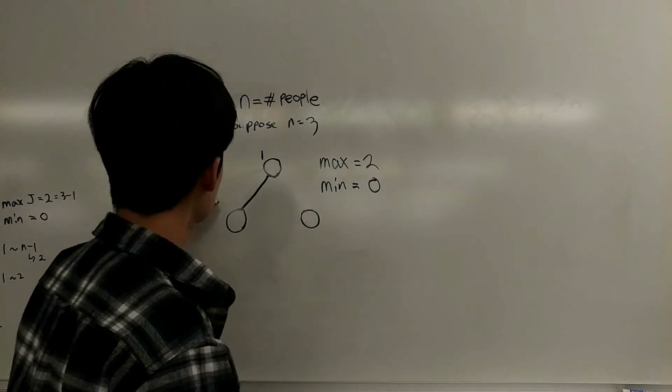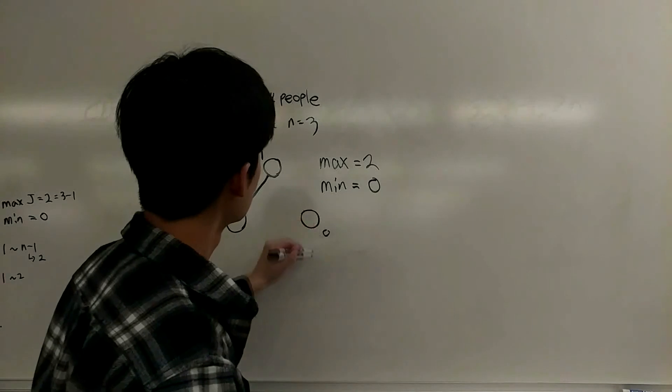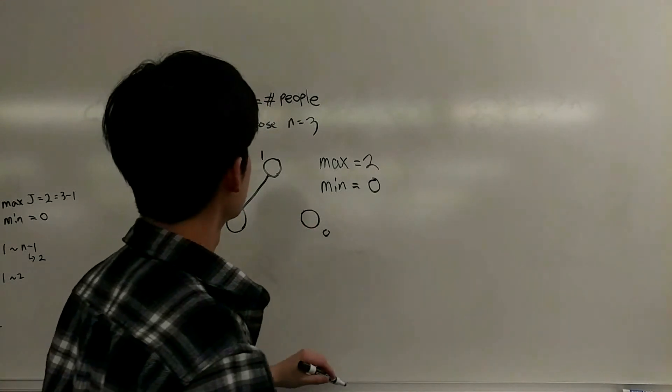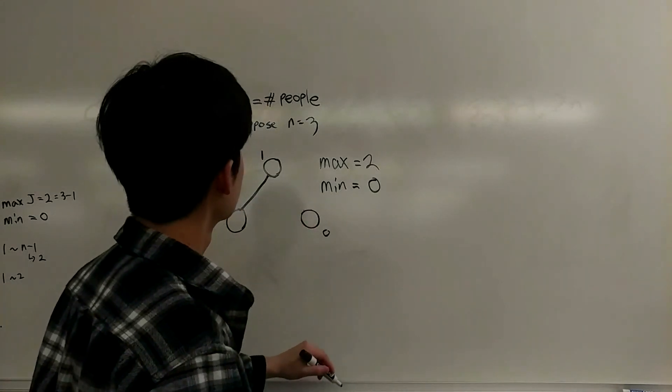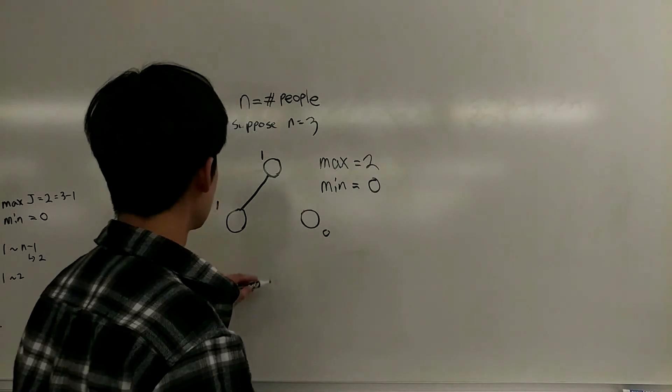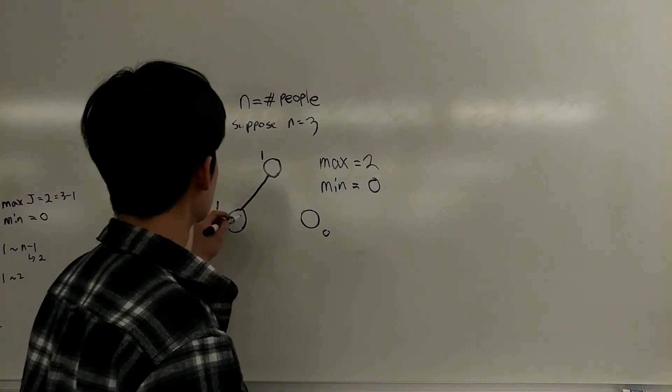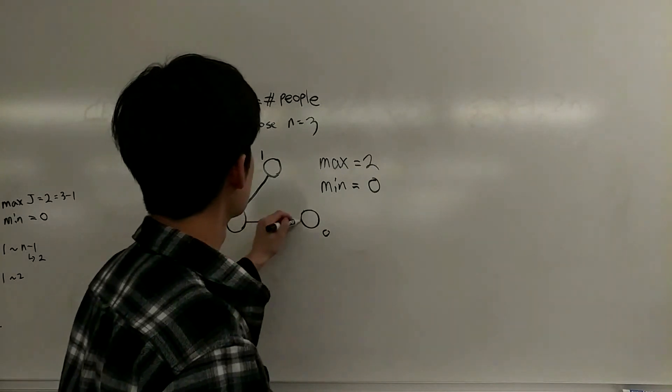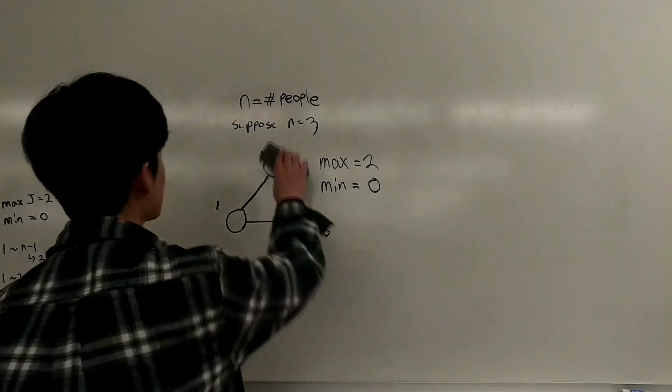In another case, two people are friends with each other, while one of them isn't friends with neither one of them. This also complies with PHP, because there's at least two people with the same number of friends, which is one.